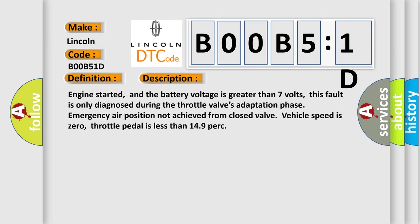Engine started, and the battery voltage is greater than seven volts. This fault is only diagnosed during the throttle valve's adaptation phase. Emergency air position not achieved from closed valve, vehicle speed is zero, throttle pedal is less than 14.9 percent.